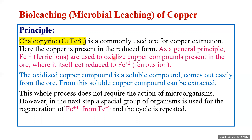The chalcopyrite ore, where copper is present in reduced and insoluble form, is treated with ferric sulfate Fe₂(SO₄)₃. The ferric iron Fe³⁺ oxidizes the copper present in the ore. When ferric iron oxidizes copper, it itself gets reduced to ferrous iron. So ferric iron is converted into ferrous iron, and CuFeS₂ copper gets oxidized and converted into CuSO₄ — copper sulfate — which is a soluble compound and comes out easily from the ore.